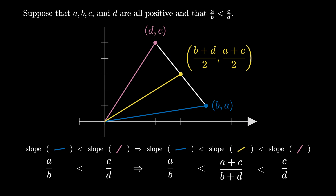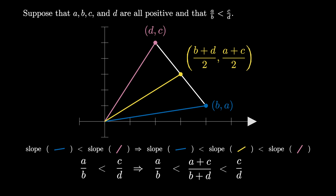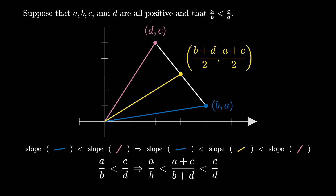Therefore, the condition that A over B is less than C over D implies that A over B is less than A plus C over B plus D, which is less than C over D. The fraction A plus C over B plus D is the mediant of A over B and C over D, and this inequality is known as the mediant inequality.